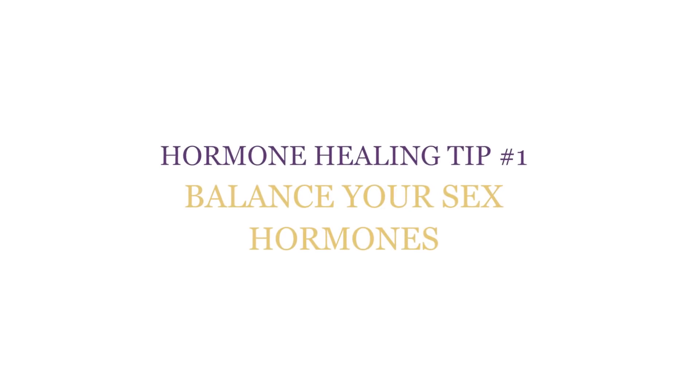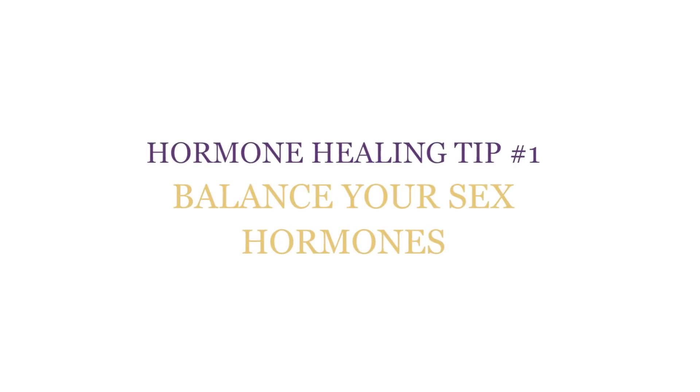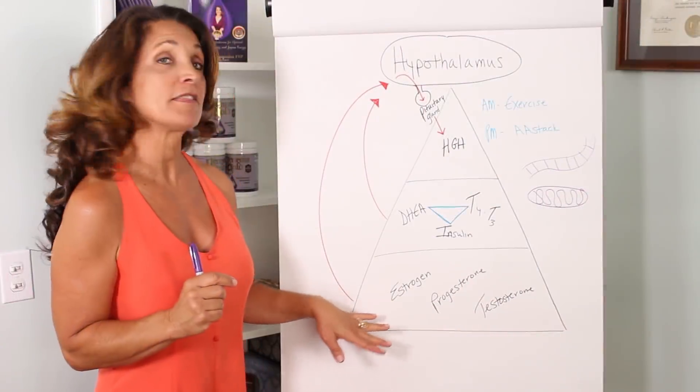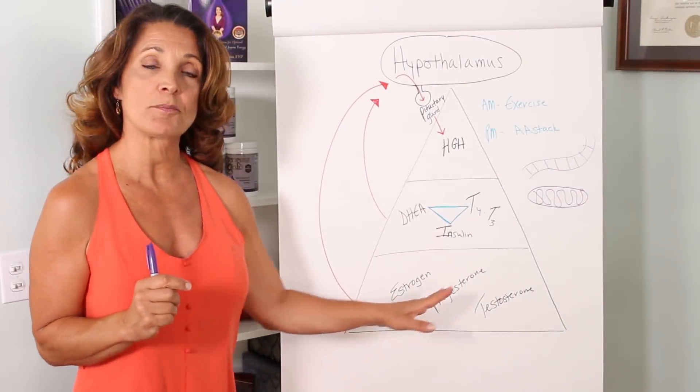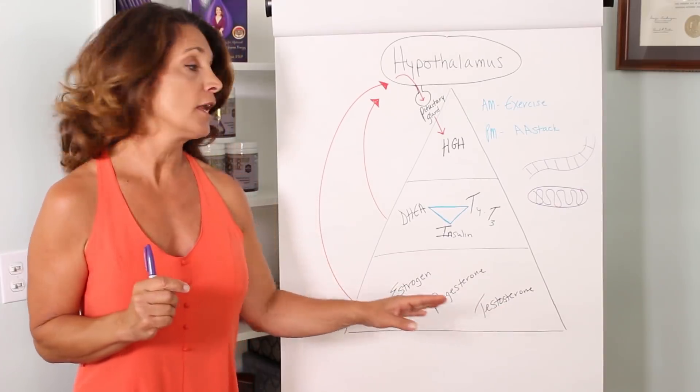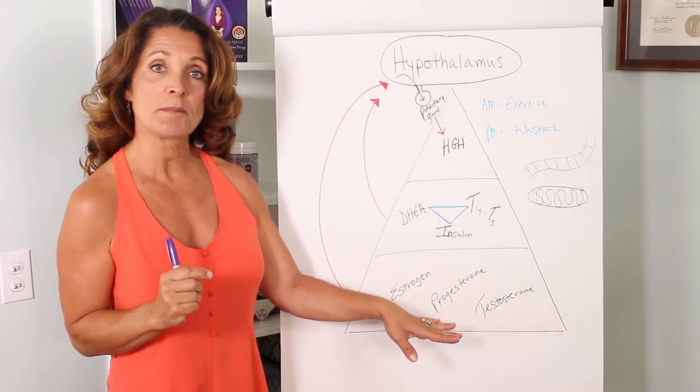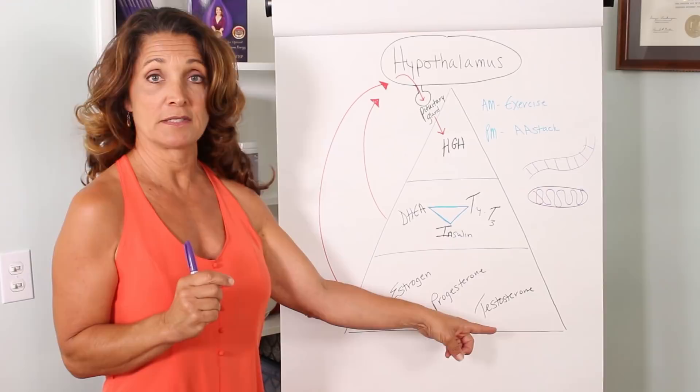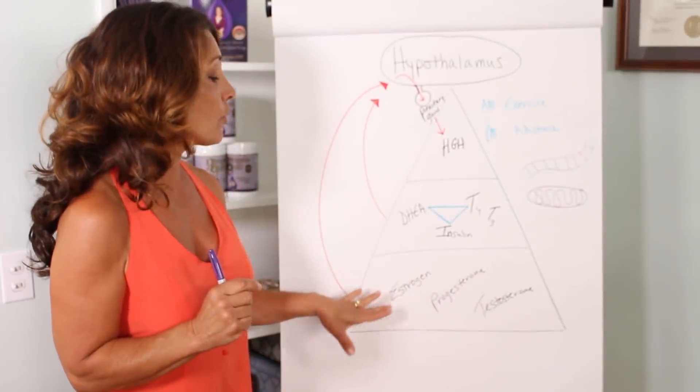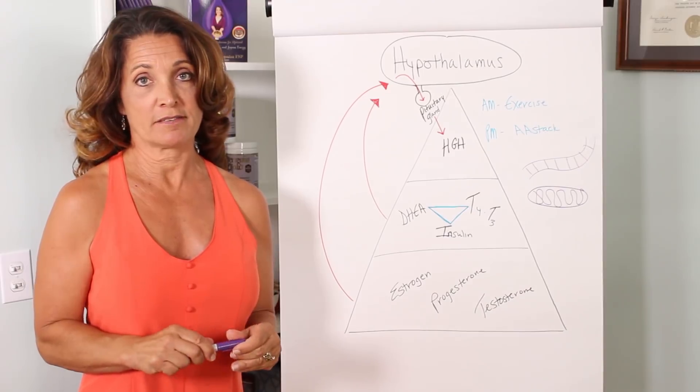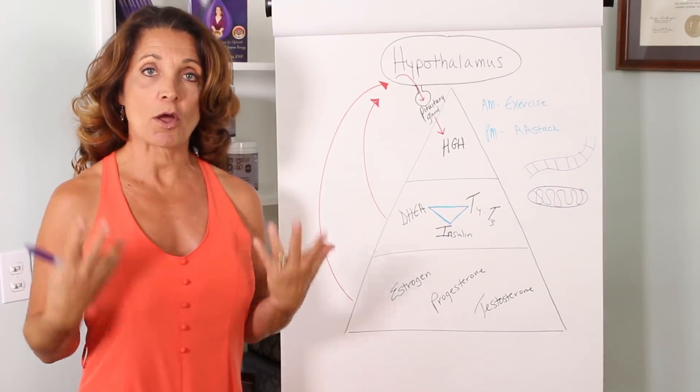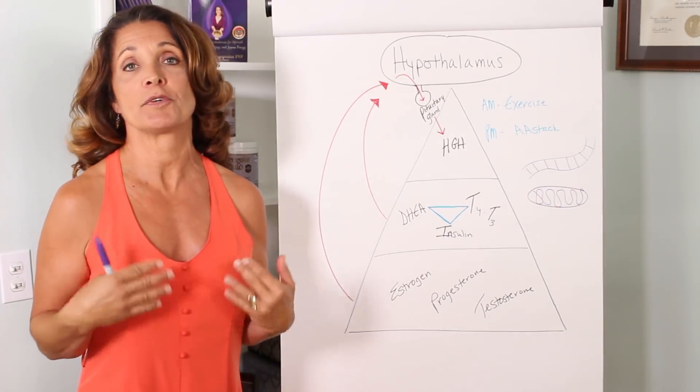So it starts with getting your sex hormones in balance. That is the first step. And here you see at the base of the pyramid of healthy hormones is estrogen, progesterone and testosterone. For females, all three of these hormones. For males, just the testosterone. These hormones, these sex hormones are vital to your anti-aging process. They actually create that growth effect that allows you to rejuvenate tissue.